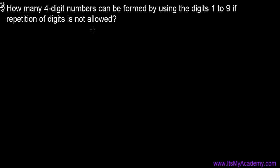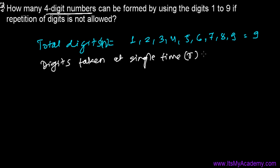To solve this question we can use the direct formula of permutation or we can use the fundamental principle of counting also. Both ways are possible. So first we have the digits - total digits are 1, 2, 3, 4, 5, 6, 7, 8, and 9. So we have total digits n equals 9, and the question is asking us to make four-digit numbers. So at one time we have to take four digits. So digits taken at single time, that we generally represent by r, is 4.